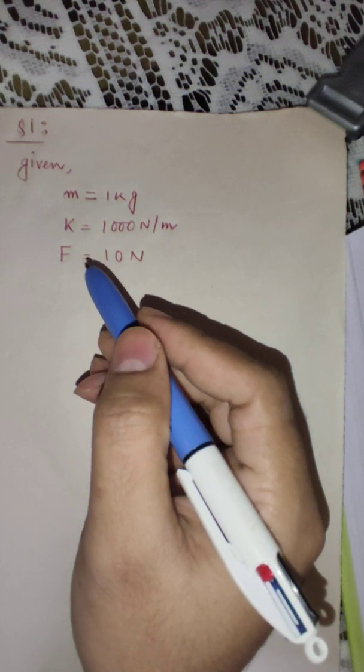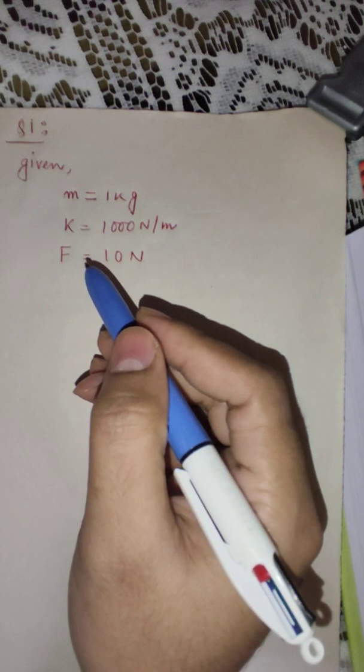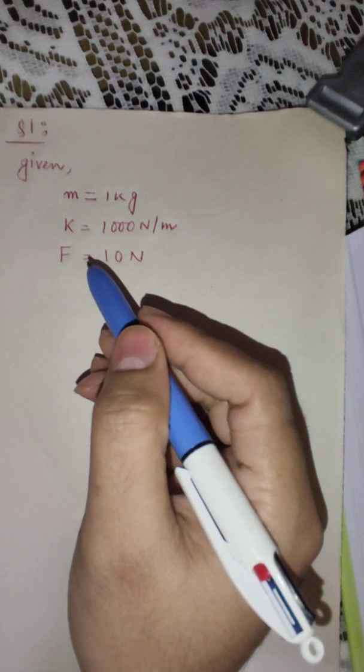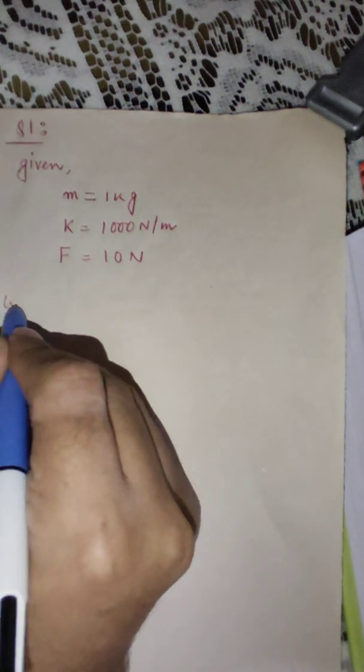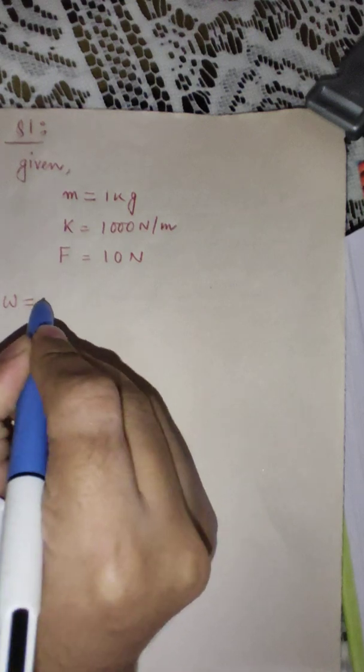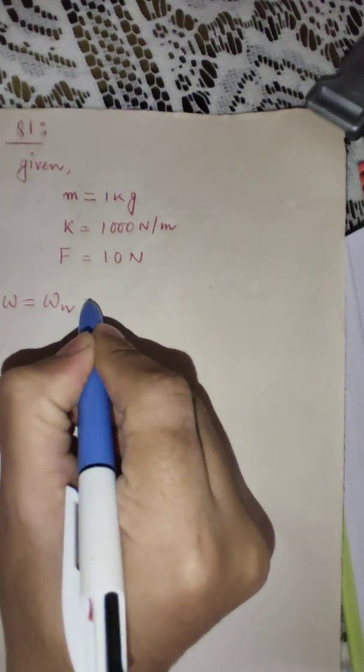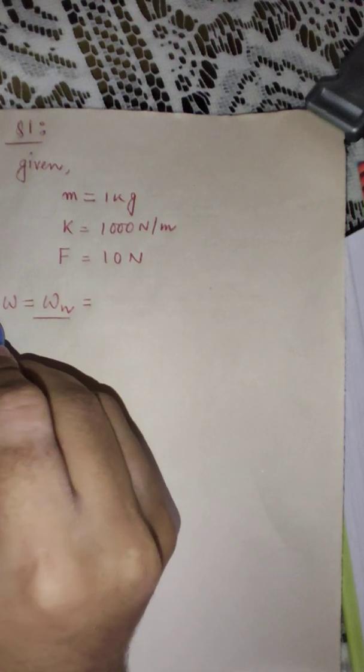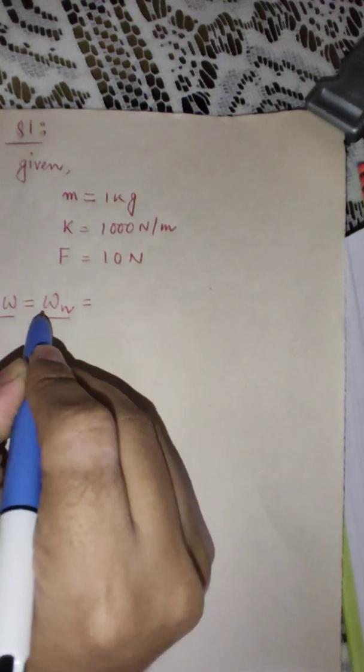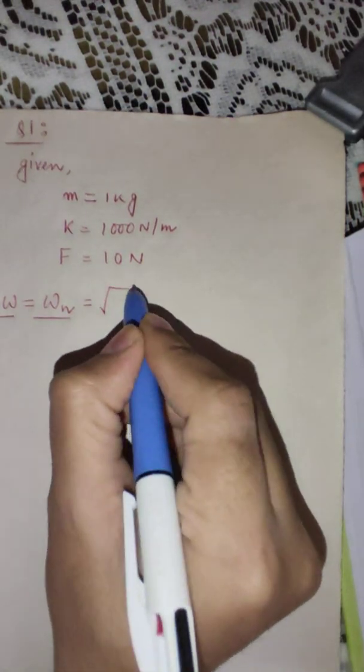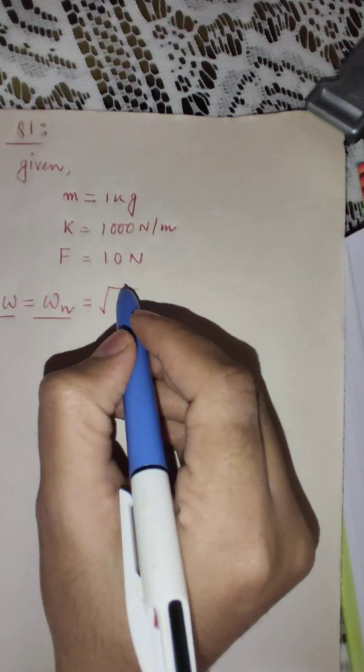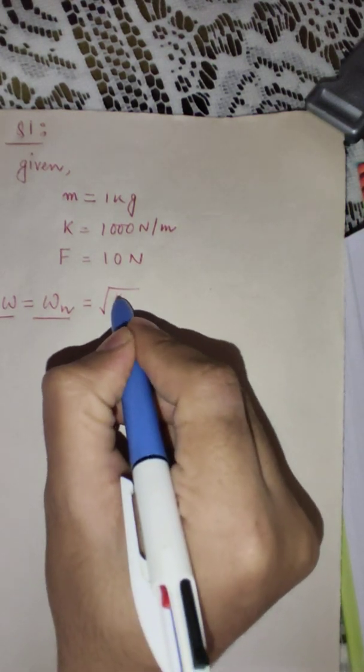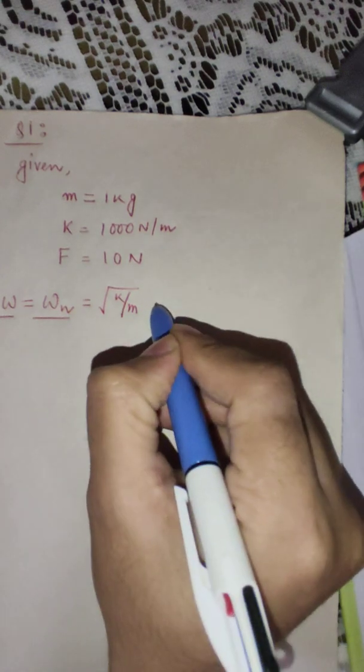The first point is the frequency at resonance. Frequency at resonance means the natural frequency omega N and the external excitation frequency omega will be equal in nature at resonance. So the frequency at resonance is root over k by m.